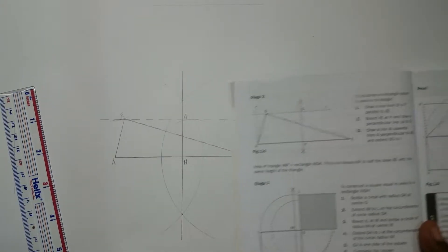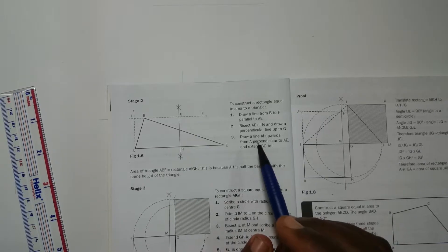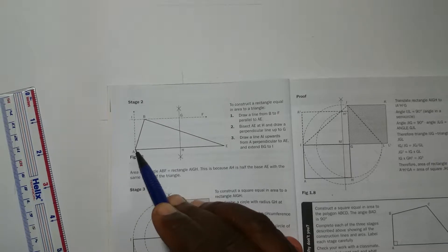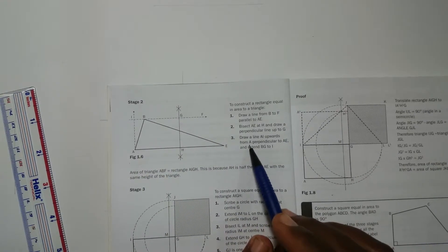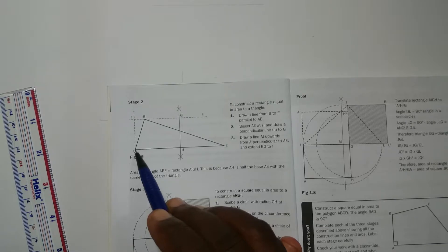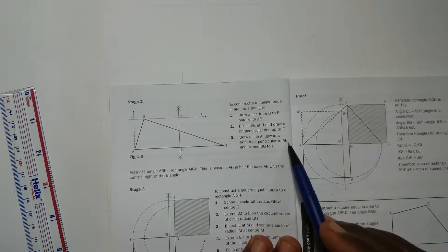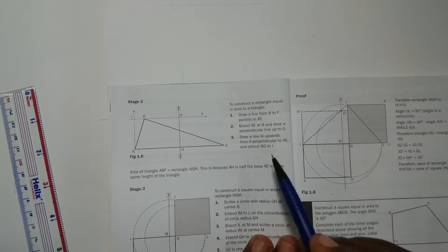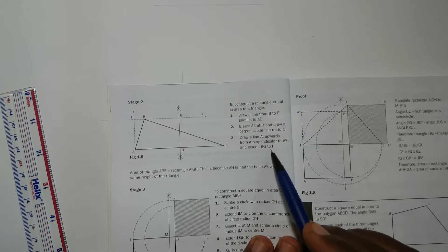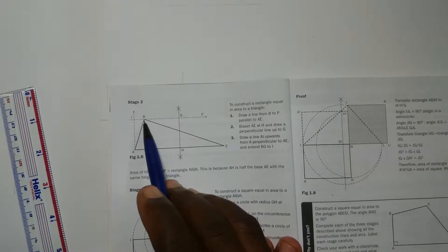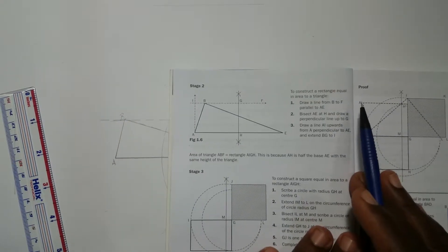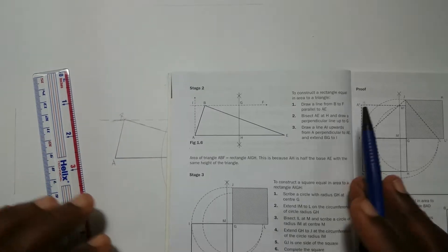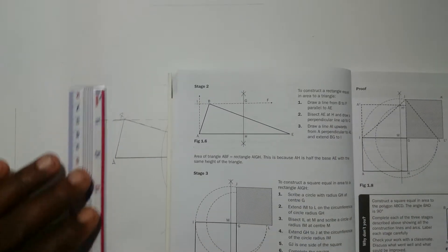The next thing we're gonna do is, all you have to do is follow the steps: draw a line AI upwards from A, which is the corner, perpendicular to AE - and we know perpendicular is 90 degrees, going up. And extend BG to I. If you haven't already, in this case we would have already extended BG to I.